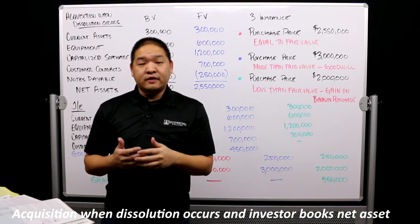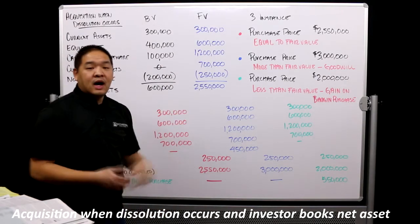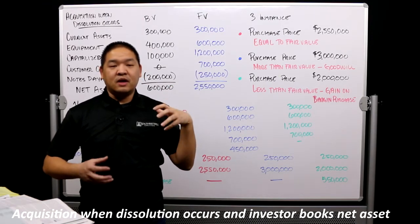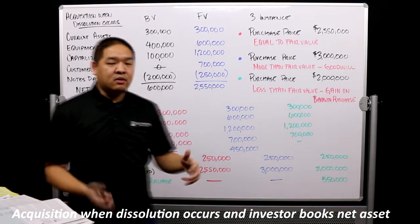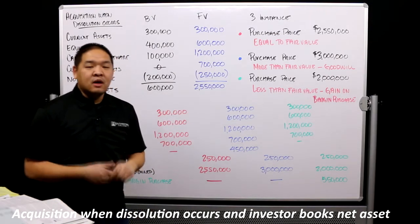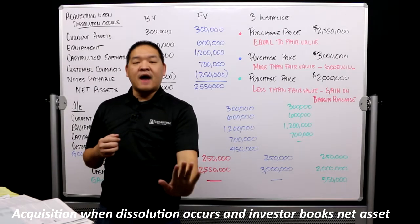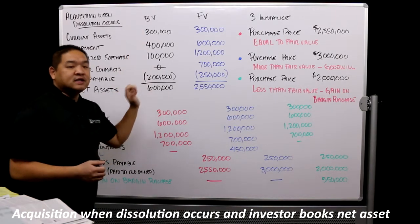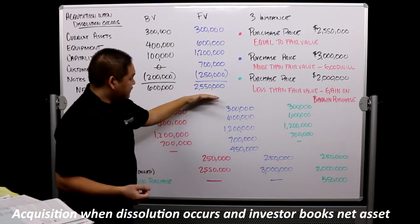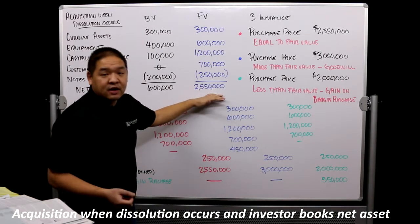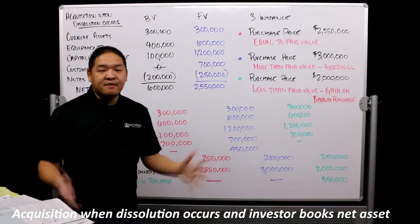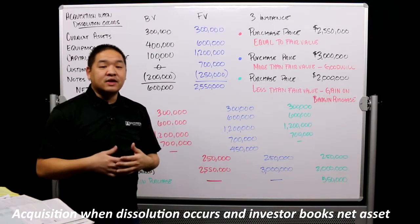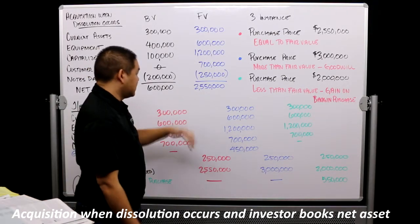There are three instances under the consolidation method that might occur. One, we pay exactly what they're worth - $2.55 million. Two, we pay more because we are so invested in this corporation that we're willing to put more money on the table, say $3 million. Three, we pay less - maybe they're trying to exit quickly and accept $2 million, or perhaps this is a bankruptcy situation where a bargain purchase of $2 million versus $2.55 million is accepted.